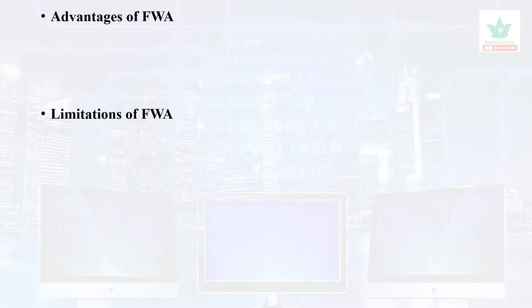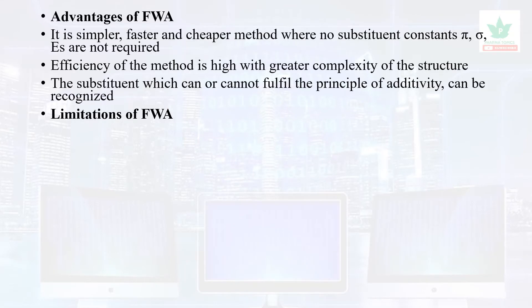Let us see the advantages of the Free-Wilson approach. It is a simpler, faster, and cheaper method. No substitution constants such as pi, sigma, or Es — which are required in the Hansch equation — are needed here. The efficiency of this method is high with greater complex structures. The substitutions that can or cannot fulfill the principle of additivity can be recognized.